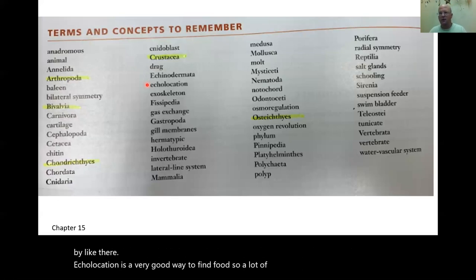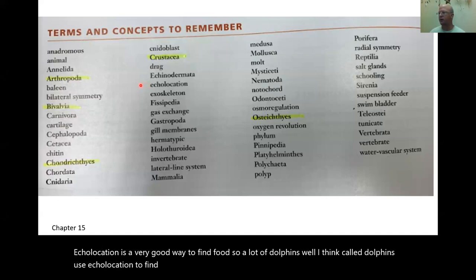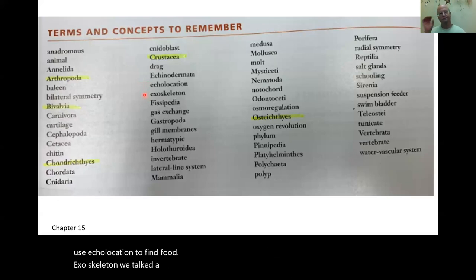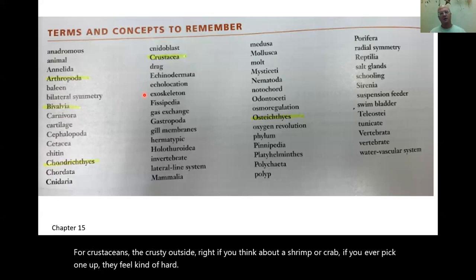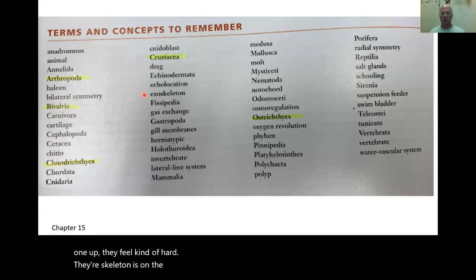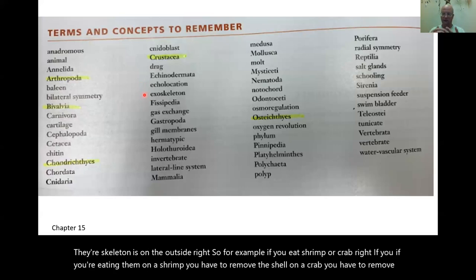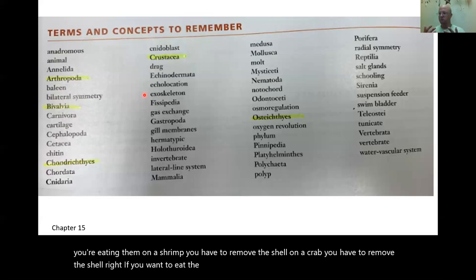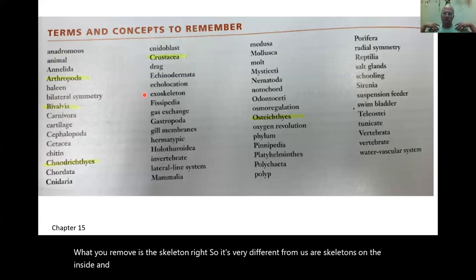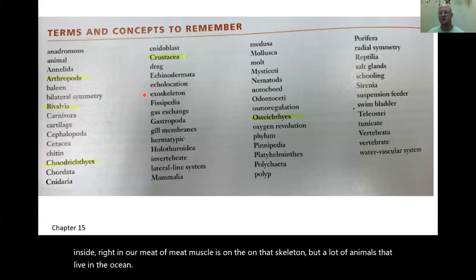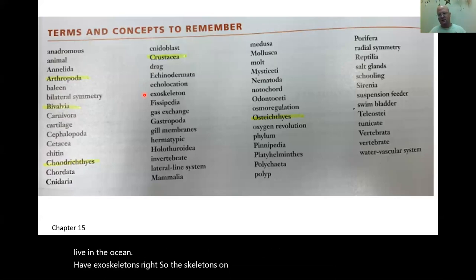All dolphins use echolocation to find food. Exoskeleton — for crustaceans, the crusty outside. If you think about a shrimp or crab, their skeleton is on the outside. When you eat shrimp or crab, you have to remove the shell — that's the skeleton. Our skeleton is on the inside and our muscle is on the skeleton, but many ocean animals have exoskeletons that protect all the organs and muscles inside.